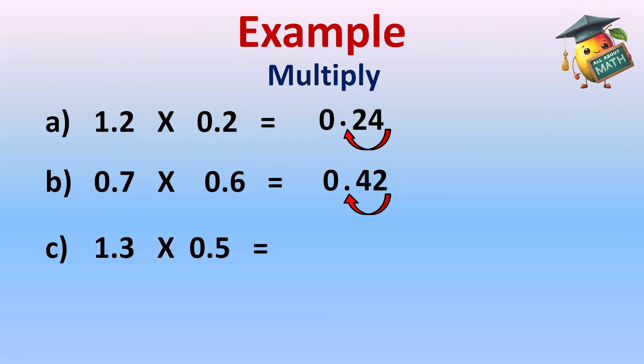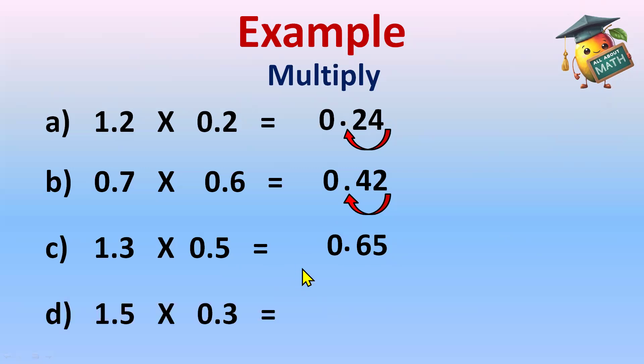Part C: 1.3 multiply 0.5. Remove the decimal and multiply. 13 fives are 65. Count the total number of decimal places: 1 and 2. So decimal will come after two digits. And before that there is no number, so the answer is 0.65.